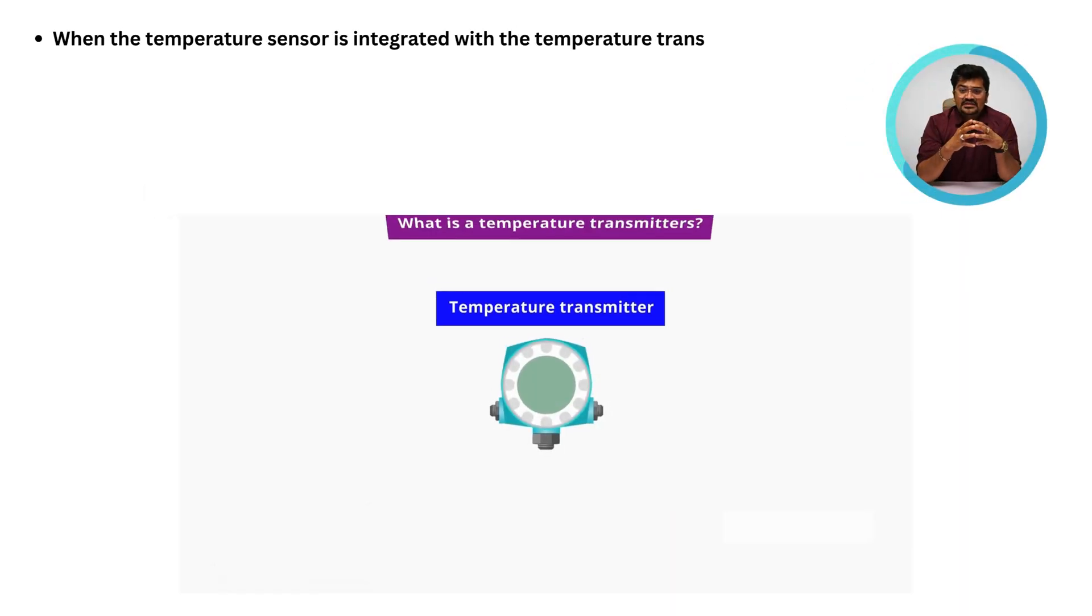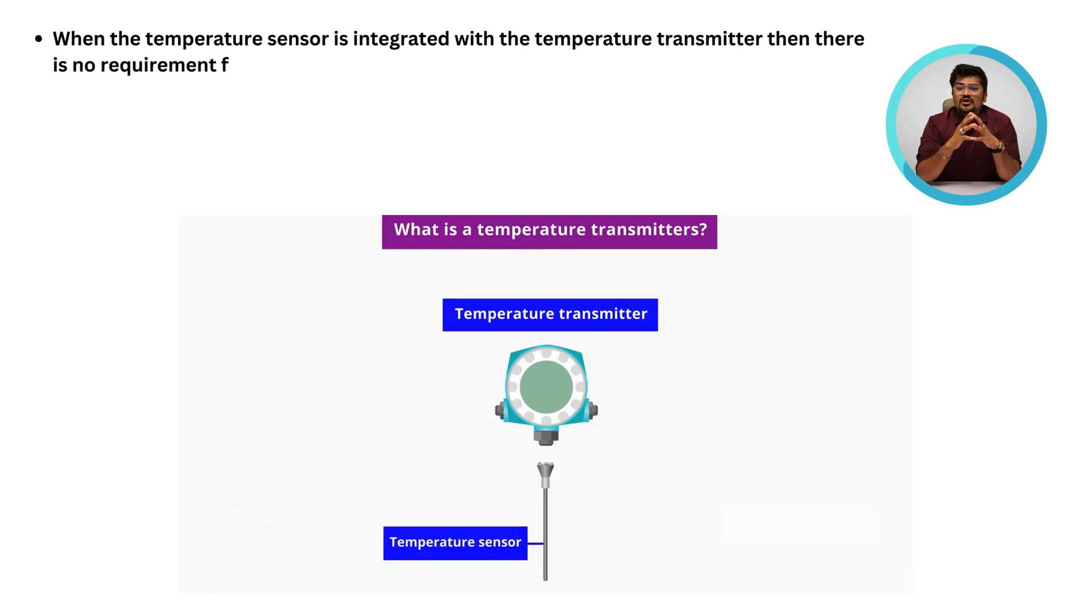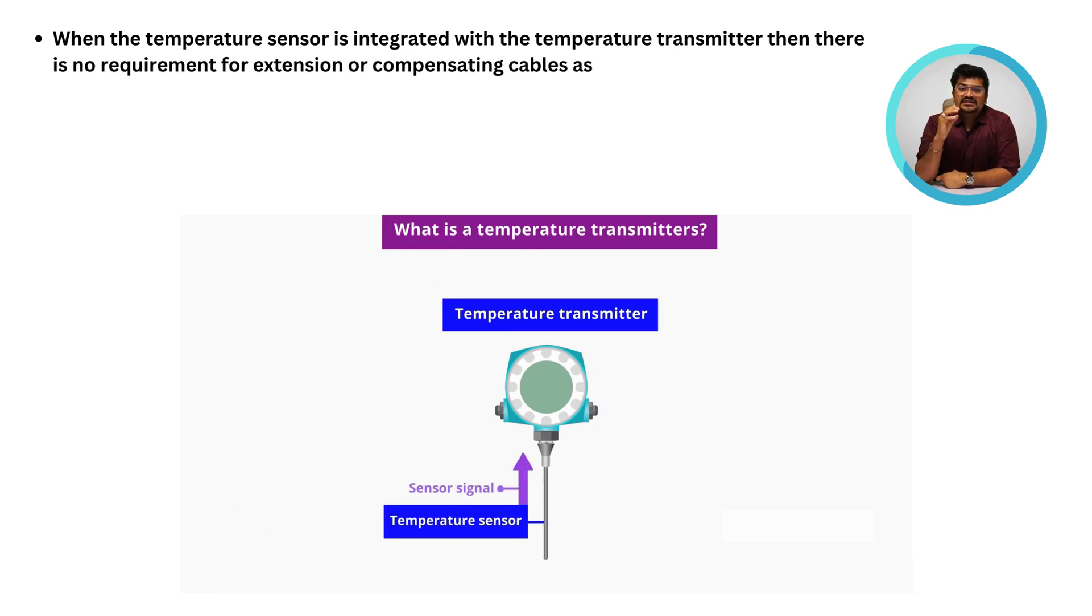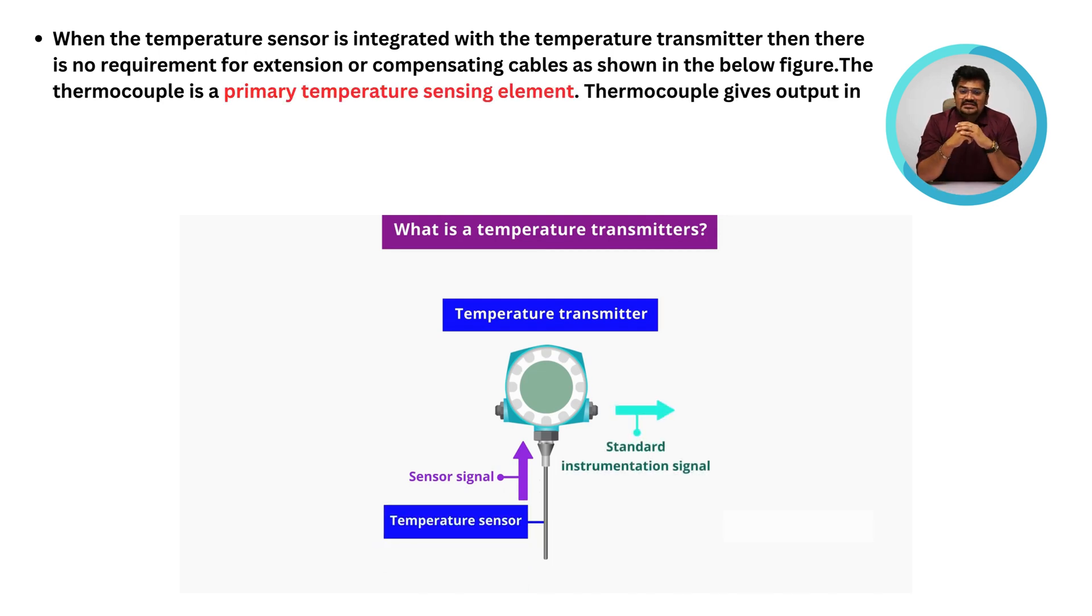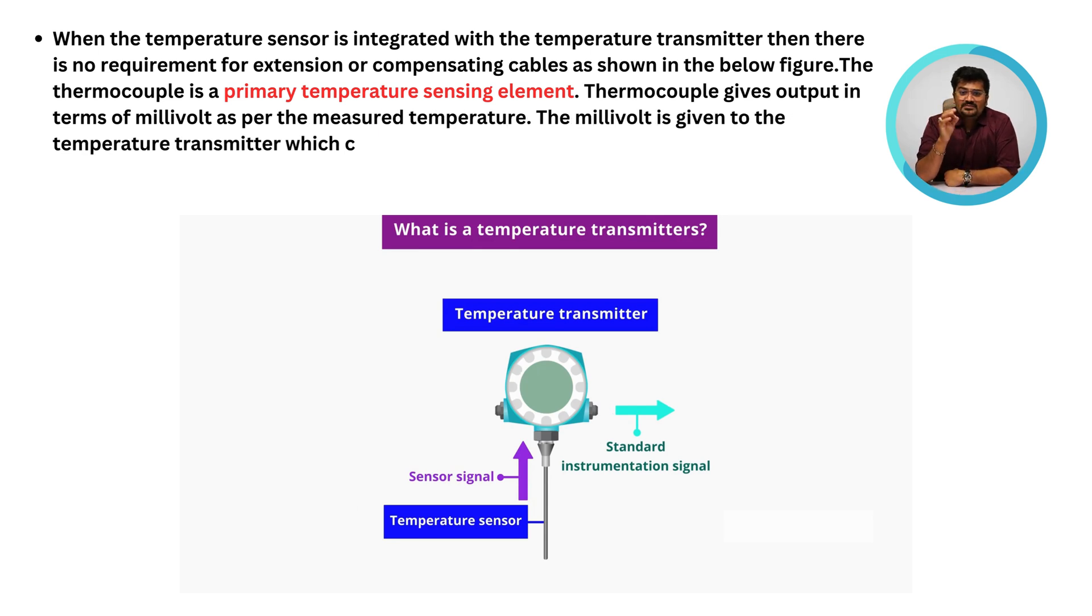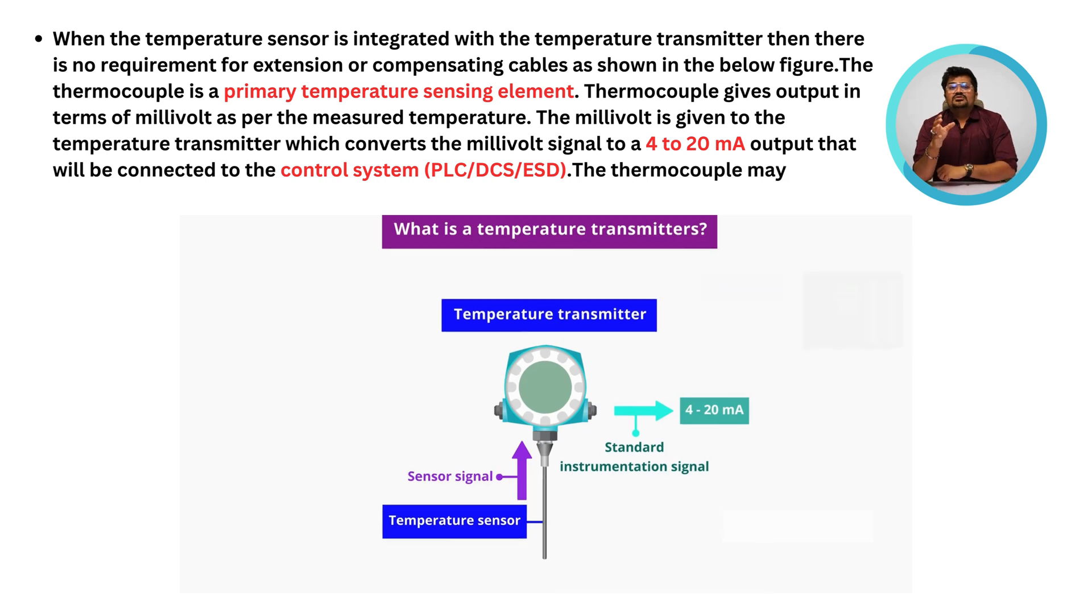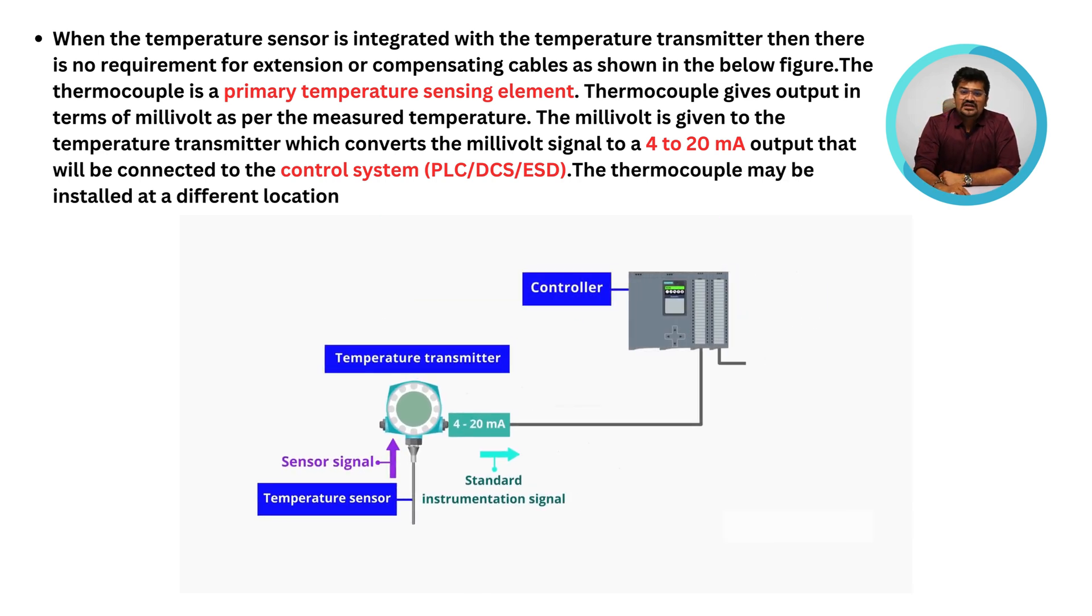When the temperature sensor is integrated with the temperature transmitter, then there is no need for extension or compensating cables. We can see this in the figure. The thermocouple is the primary temperature sensing element. The thermocouple gives output in terms of millivolts as per the measured temperature. The millivolt is given to the temperature transmitter which converts the millivolt signal to a 4 to 20 mA output that will be connected to the control systems like PLC or SCADA.